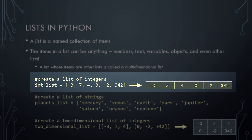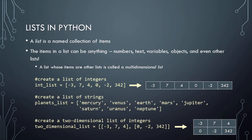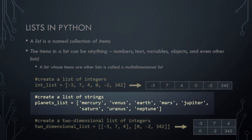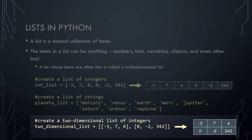Python knows that this is a list because of the square brackets. We are setting the values of the elements in the list by placing a comma-separated list of values inside the square brackets. Again, lists can contain items of any data type. In this second example, we're declaring a list of planets and setting the list's elements to the names of all of the known planets in our solar system. Note that the International Astronomical Union demoted Pluto to the status of a dwarf planet in 2006, which is why it is not included here. In this third example, we're declaring a two-dimensional list — that is, a list whose elements are also lists. If it helps, you can think of this as a 2 by 3 matrix, with two rows and three columns.